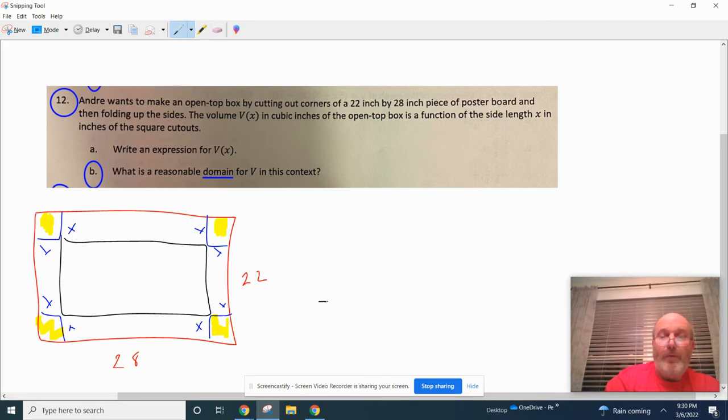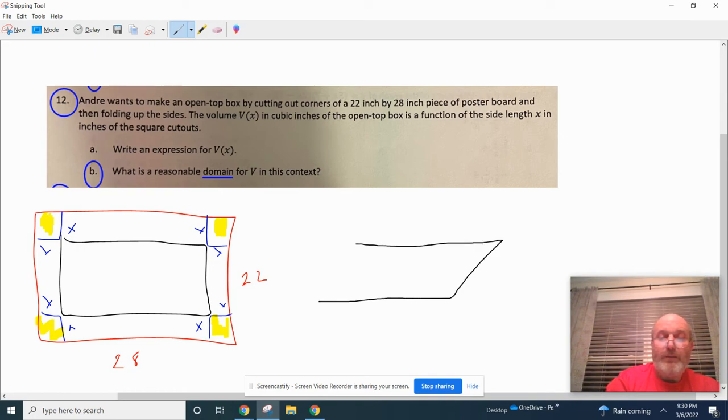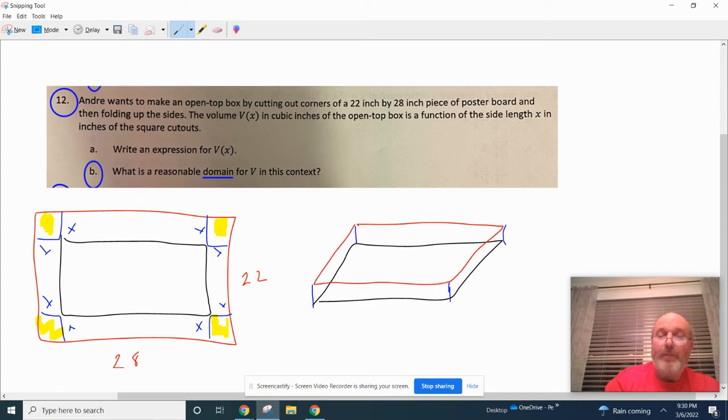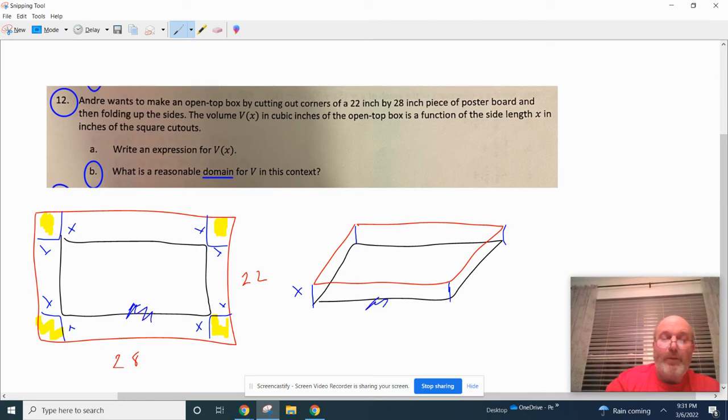You're going to end up with the bottom of the box, you're going to end up with the height of the box on the top of the box. That blue part is X, that's the height of the box.